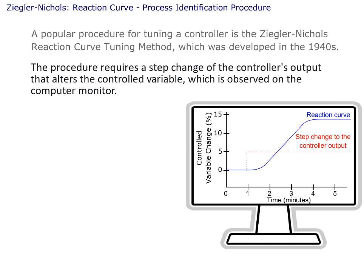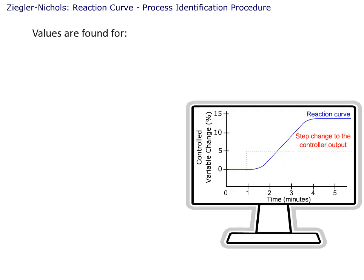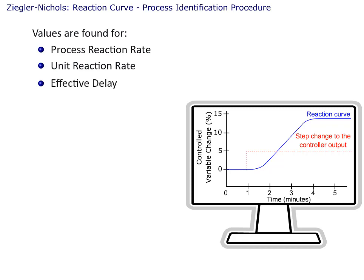The procedure requires a step change of the controller's output that alters the controlled variable, which is observed on the computer monitor. Based on the shape and magnitude of the controlled variable's reaction curve in reference to the step changes, values are obtained and used in mathematical formulas. Values are found for the process reaction rate, the unit reaction rate, and the effective delay.